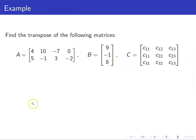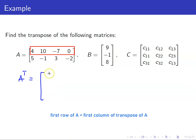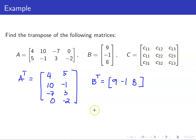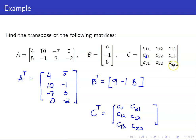For example, we want to find the transpose of the following matrices. For A transpose, the 1st row becomes the 1st column: 4, 10, negative 7, and 0. The 2nd row becomes the 2nd column. For B transpose, take note that B is a column matrix, so the transpose will be a row matrix: 9, negative 1, 8. For C transpose, this is a 3 by 3 matrix. The 1st row becomes the 1st column, the 2nd row becomes the 2nd column, and the 3rd row becomes the 3rd column.